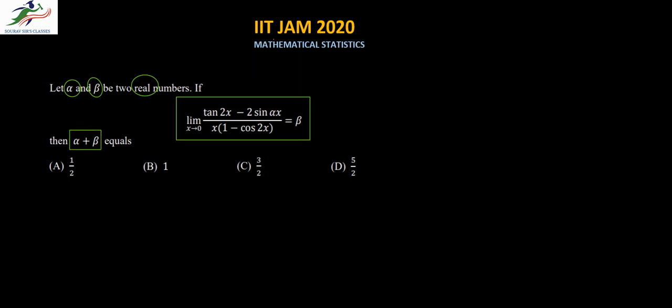For very small x, or x tending to 0, we can write sin x approximately equal to x and tan x also approximately equal to x, because both the series of sin and tan will almost equal x for very small values of x.